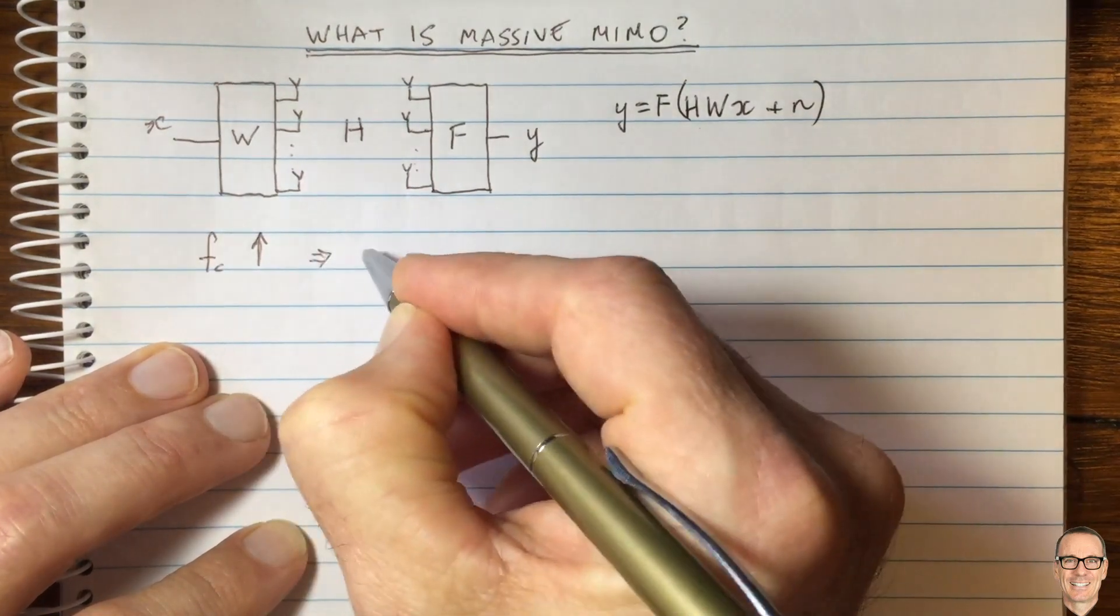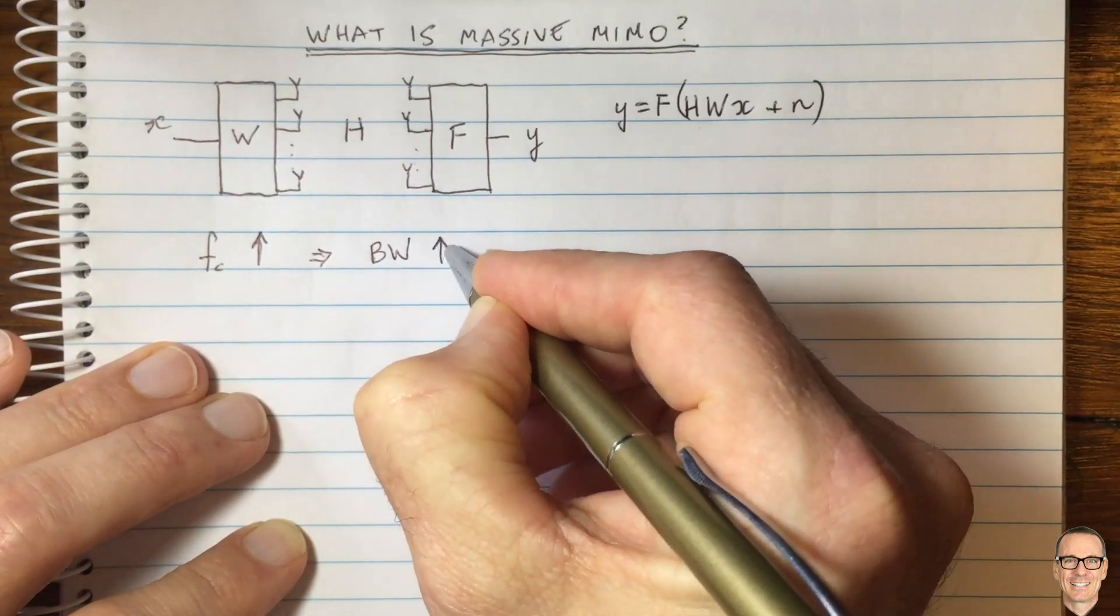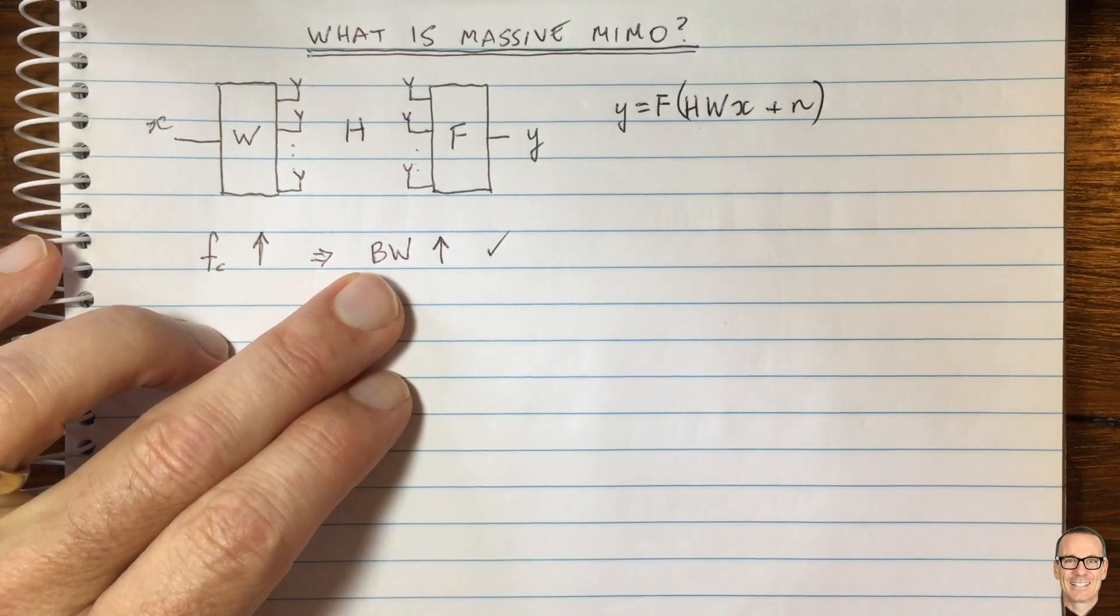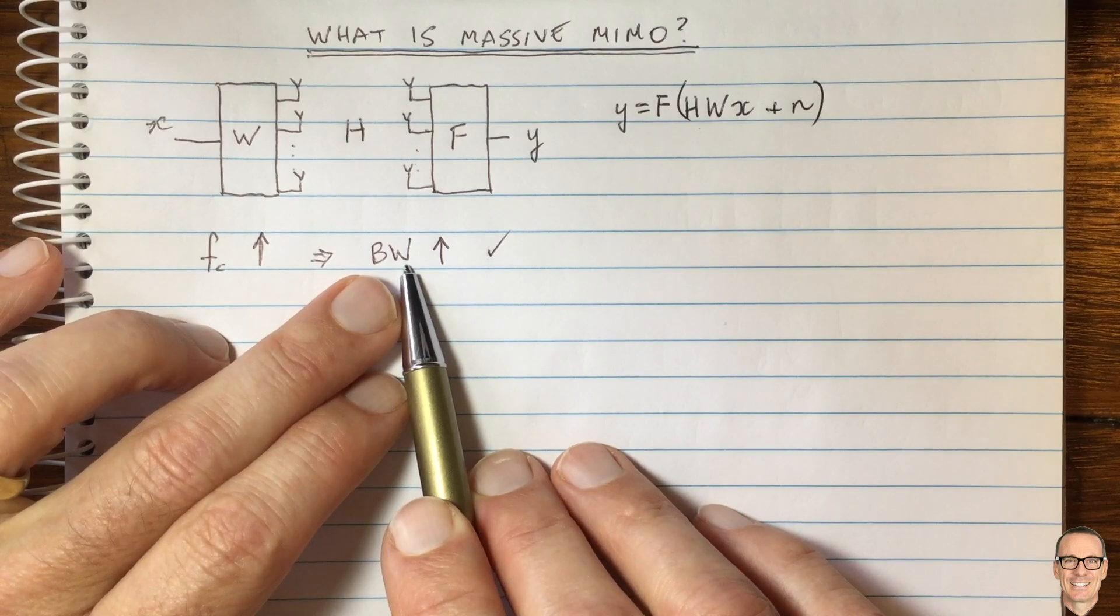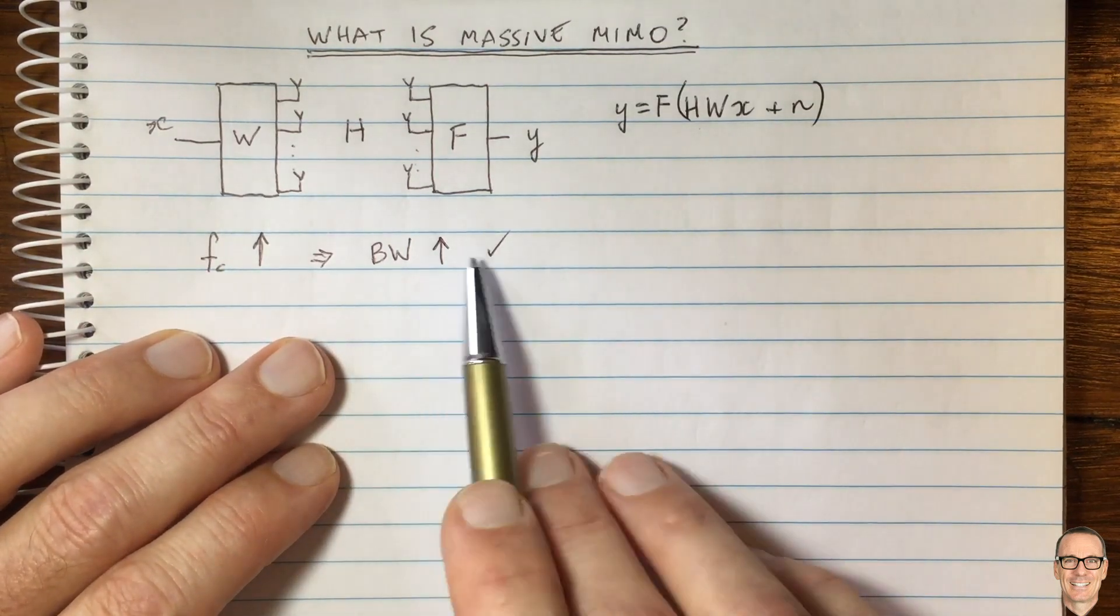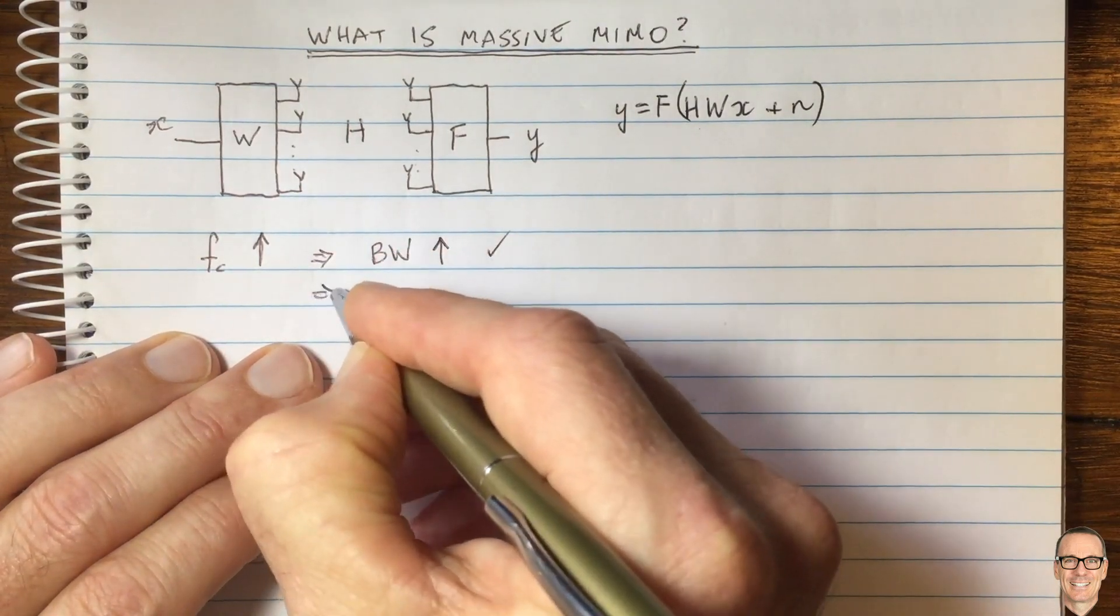As the carrier frequency goes up, this implies there's more bandwidth available because it's related to the carrier frequency, the amount of available bandwidth. This is a really desirable thing, and so this is what's being looked at for 5G mobile communications and beyond.